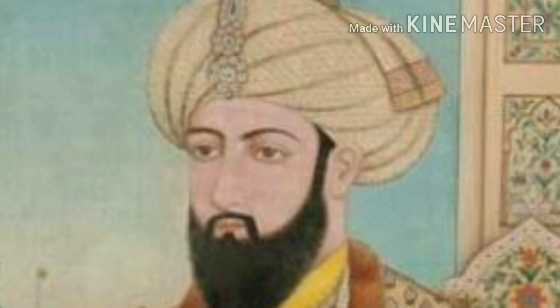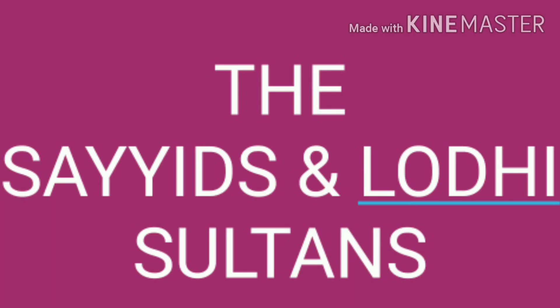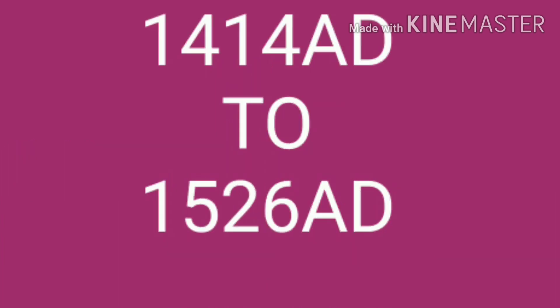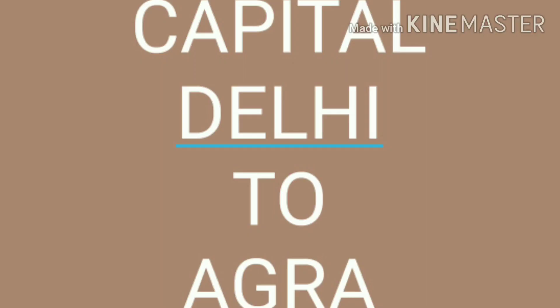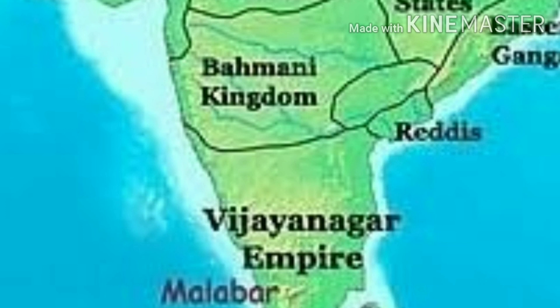The Sayyids and Lodhi Sultans (1414 AD to 1526 AD): The Sayyids ruled Delhi for a short duration and were taken over by the Lodhis, who moved the capital from Delhi to Agra. Many small kingdoms emerged with the decreasing power of the Lodhis. Following those, two dynasties were powerful: the Vijayanagara Empire and the Bahmani Kingdom.